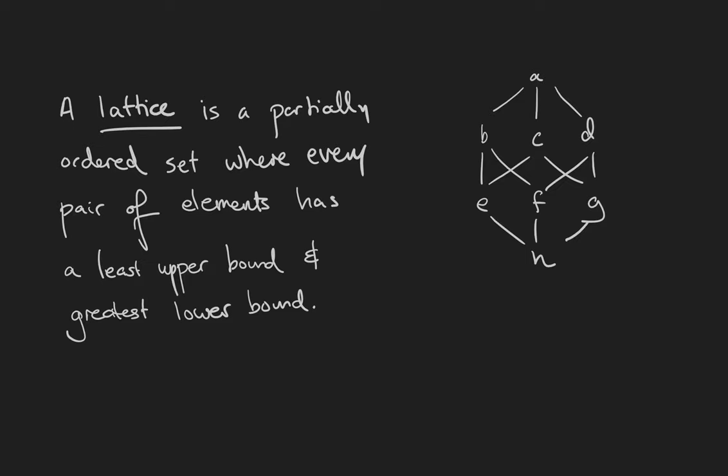We have h less than e, f and g, e less than b and c, f less than b and d, g less than c and d, and b, c, d all less than a. If we pick a pair of elements such as f and g, their greatest lower bound is h and their least upper bound is d. You can check that this works no matter which pair of elements you pick.